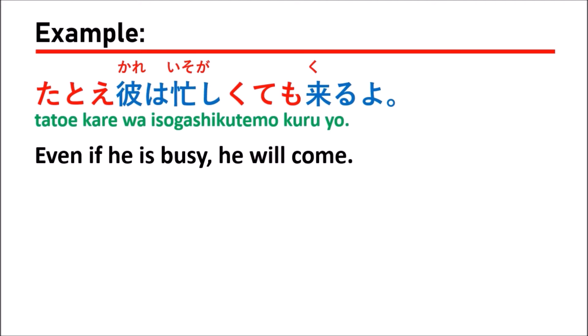In this example, you can see they use the i-adjective. The i-adjective here is いそがしい, which means busy. They cut out the い, leaving いそがし, and follow it by くても. So we get いそがしくても, and the sentence is たとえ、忙しくても、くるよ — even if he is busy, he will come.